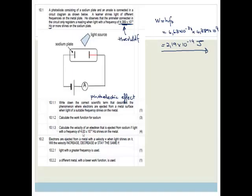Now it says, calculate the velocity of an electron that is ejected from the sodium if light of a frequency of 4.83 times 10 to the 14 hertz shines on the metal. So then, if you look at your formula sheet you will see it says that HF is equal to HF0 plus a half mv squared or you can see it's E is equal to W plus a half mv squared where this is the energy of the incident light, this is the work function, this is the mass of the electron and this is its velocity.